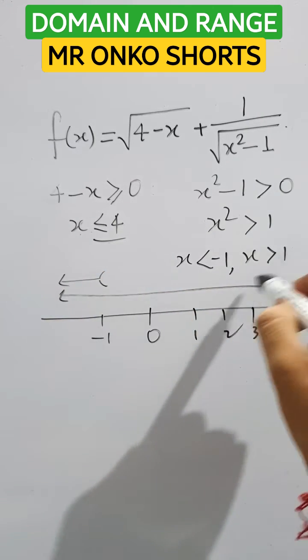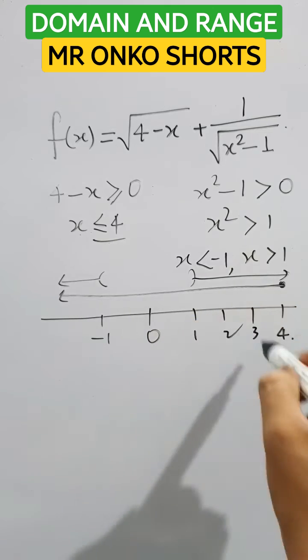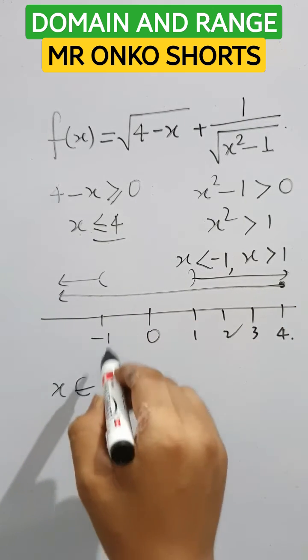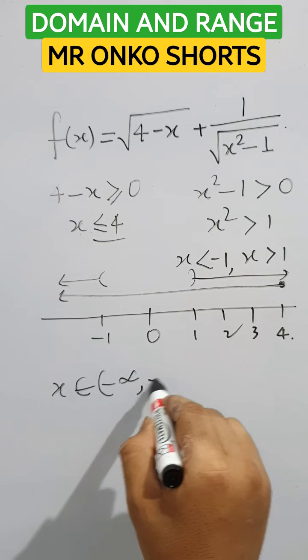So the common zone is x belongs to minus infinity to minus 1 open interval, union open interval 1 to